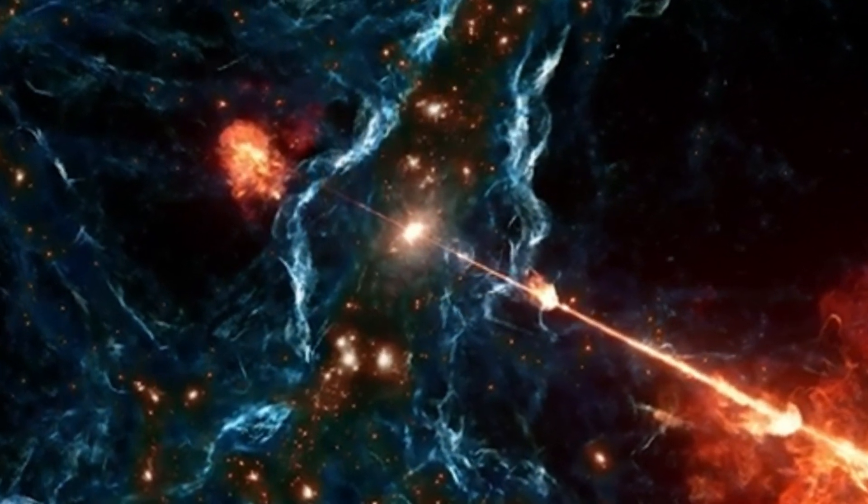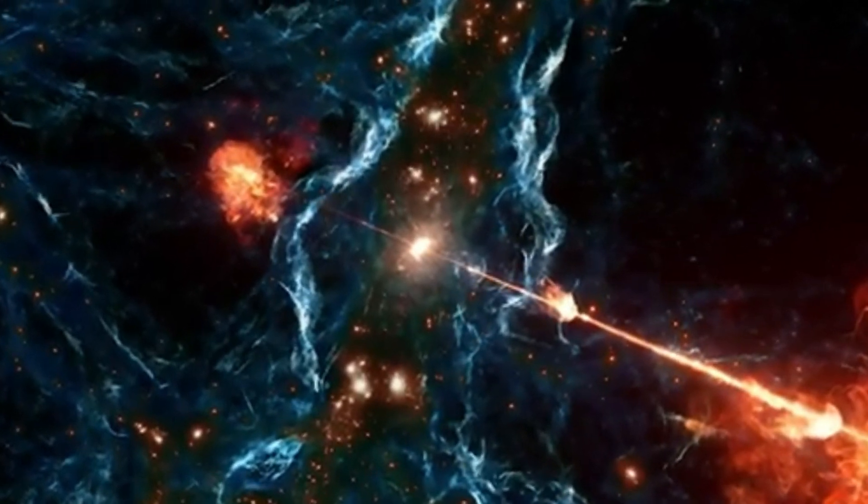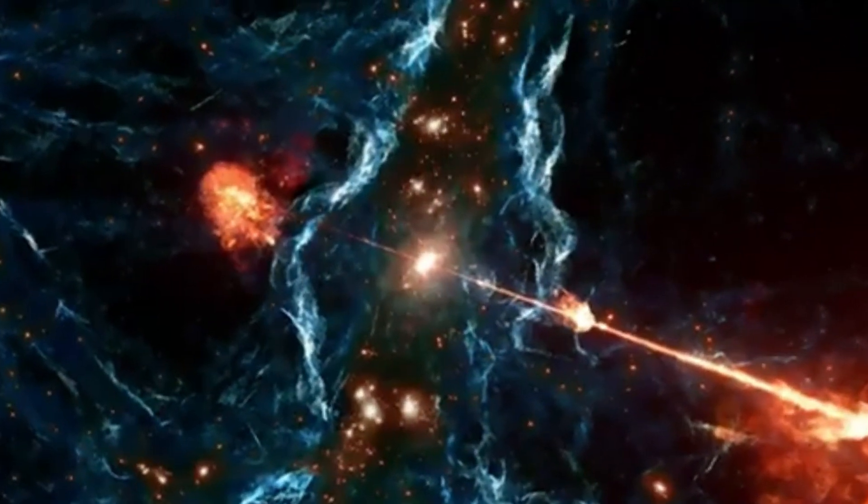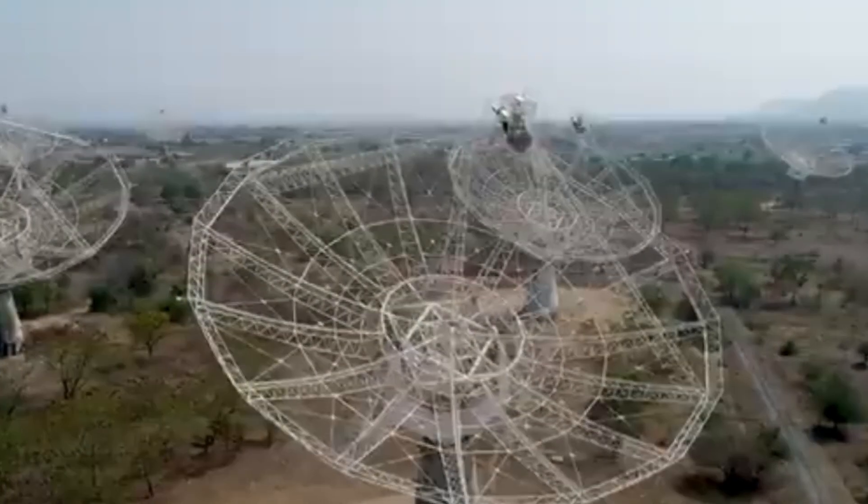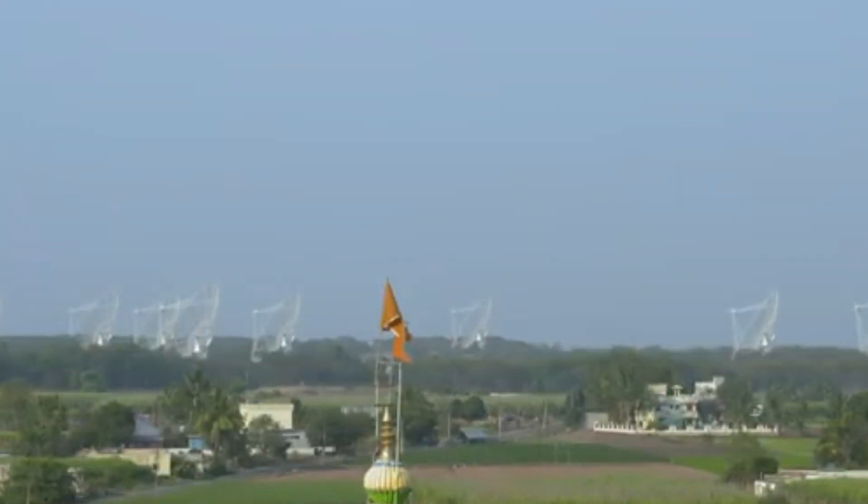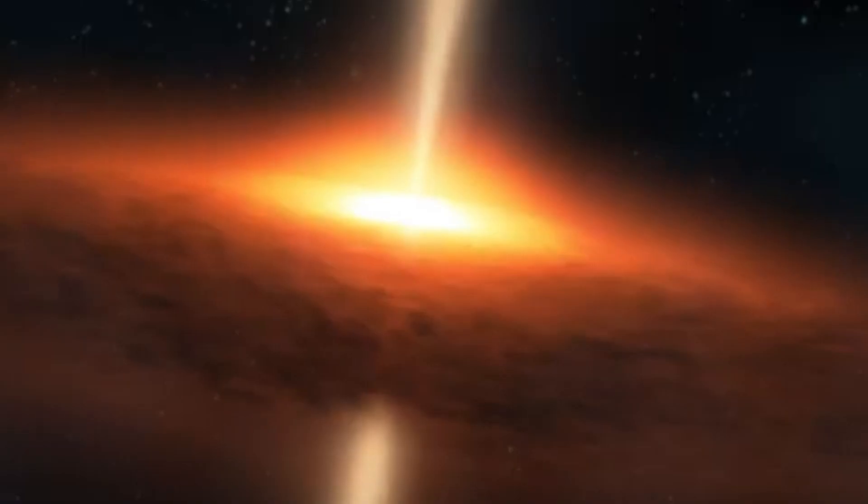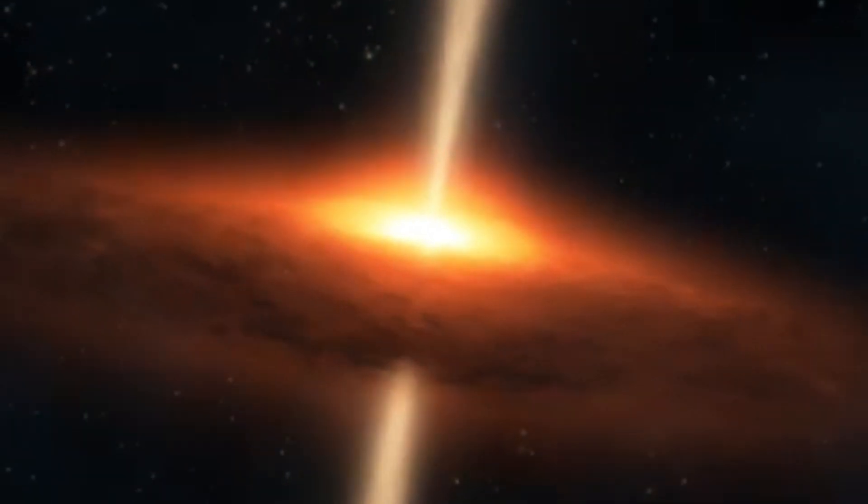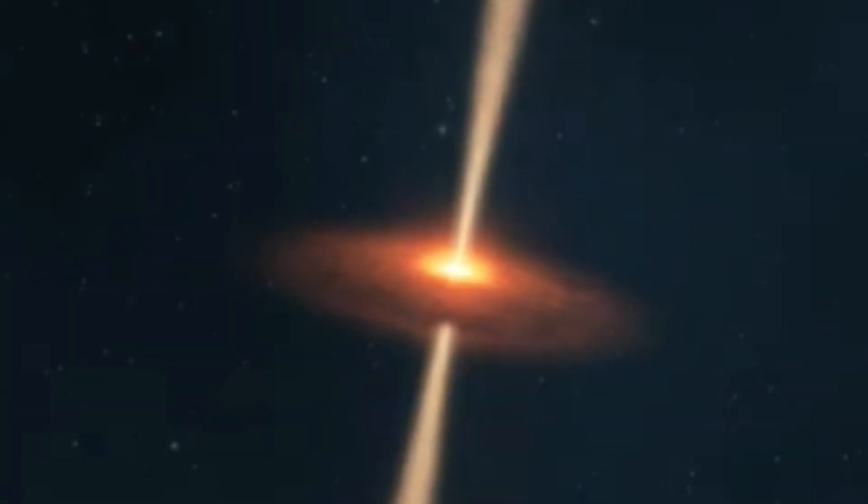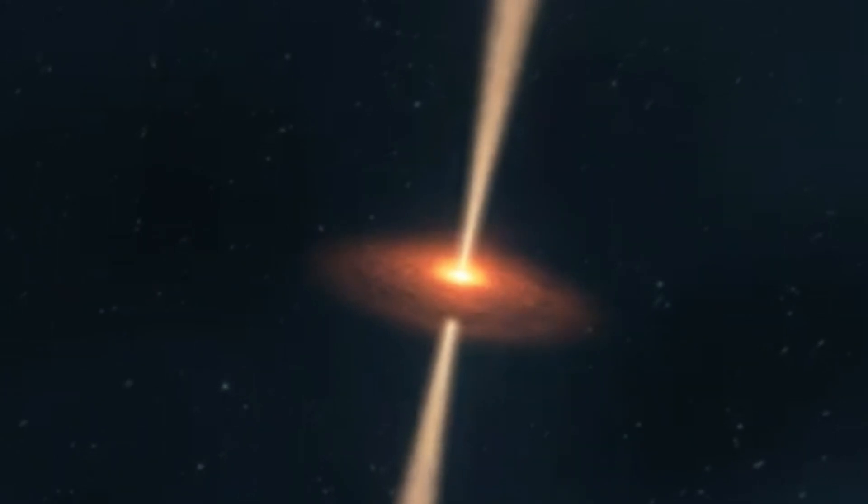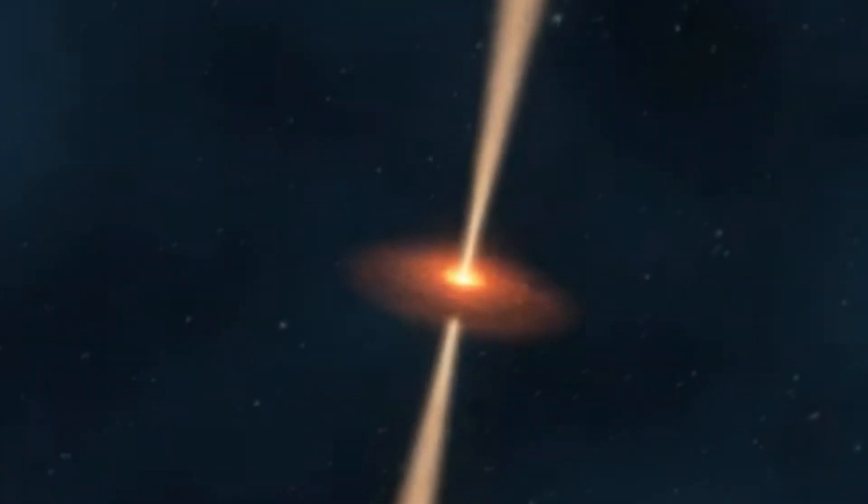They needed to understand more than just the structure. They also wanted to know the distance and age of these jets, as well as their role in the evolution of the universe. To do this, they used data from the Dark Energy Spectroscopic Instrument, DESI, which was crucial in measuring the redshift, or how far away the galaxy hosting the black hole was from Earth. These measurements revealed that the Porphyrion jets existed when the universe was about half its current age.